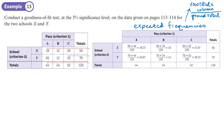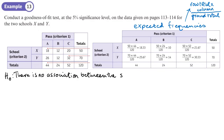So now H0 and H1. H0 will be that there is no association between the school and its pass rate — you could also say the pass rate and the school are independent of each other. H1 will be that there is an association between them.